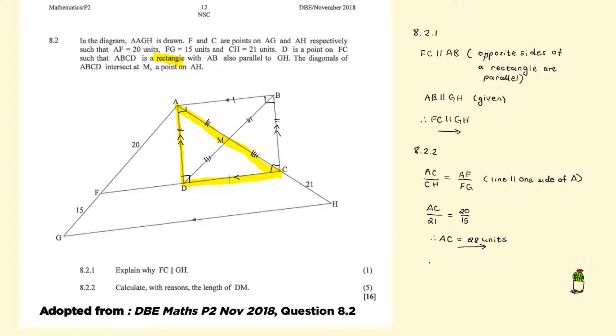So we can say that AM equals MC, which equals DM, which equals MB. The reason for this is that the diagonals of a rectangle bisect each other.